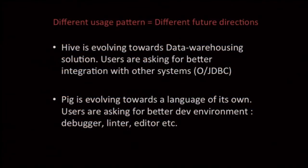Lastly, I want to talk about how this difference in user patterns is driving the future directions of these softwares. Hive is evolving toward being a database — people are expecting it to behave like one, asking for compatibility with other systems through ODBC and JDBC interfaces, and the community is working towards that. Pig, on the other hand, is evolving more as a language of its own. We recently added support for embedding Pig in Python, and users are asking for if and while loops and control structures. The end users are also asking for a better dev environment — like debuggers, linters, editors, and tools like that.